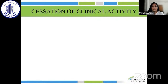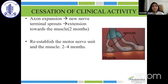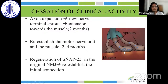The action of botulinum toxin is temporary. The axons expand and new nerve terminals sprout, extending towards the muscle in a time frame of about two months, re-establishing the motor nerve unit connection in about two to four months. Also, a newer concept is that there is regeneration of SNAP25 at the original neuromuscular junction, which re-establishes the initial connection and thereby clinical activity ceases.